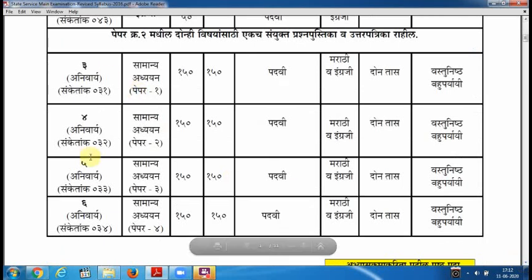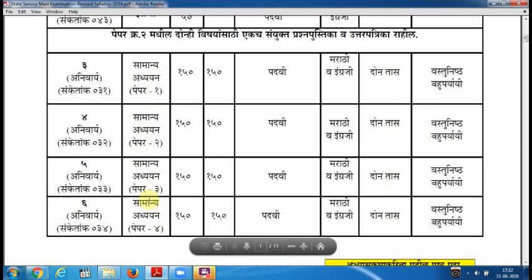Moving further, we have Paper 3, Paper 4, Paper 5, and Paper 6, also known as GS1, GS2, GS3, and GS4. All GS papers are 150 marks each with 150 questions. They are at degree level. The mode of asking is Marathi and English, and the number of hours allocated is 2 hours.